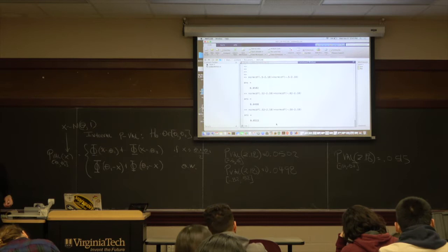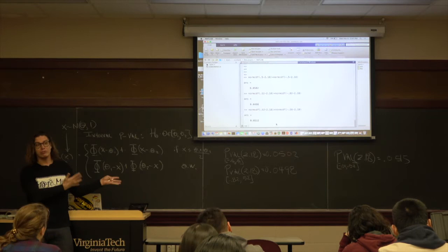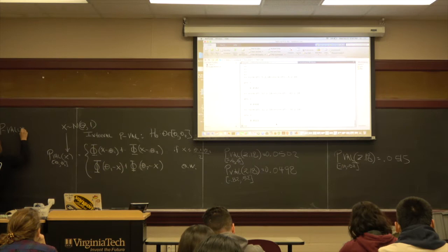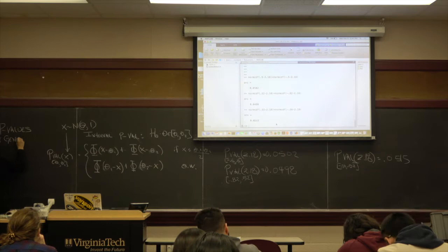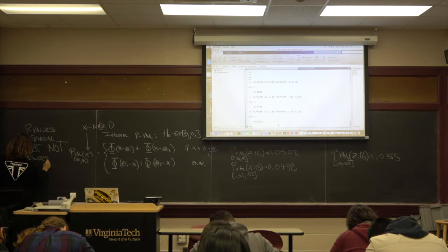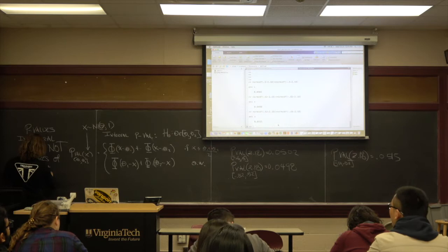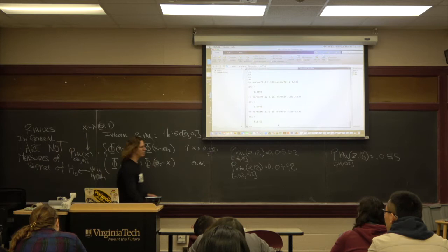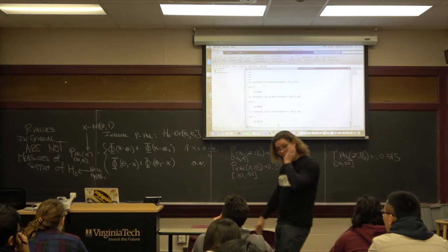And so this is what Bayesians are always talking about when they say incoherence. So p-values are not coherent measures. So they're not measures of the null hypothesis. So let me just write that down. This is the conclusion of Schervish's paper. P-values, in general, are not measures of support of H naught, the null hypothesis. This is a pretty funky measuring stick. So it doesn't operate correctly.